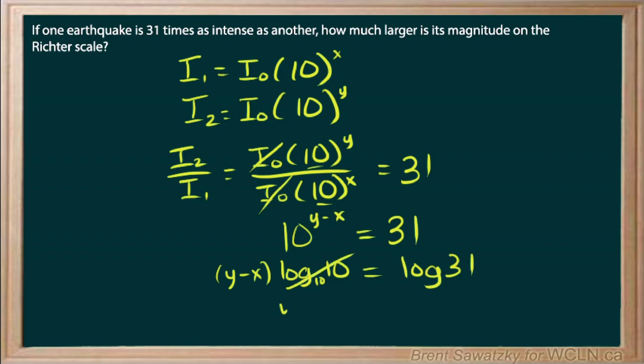So what this tells us is that the difference between the Richter scale measurements is log of 31. So we can plug that into our calculator, what is log of 31, and we come up with 1.49. So what that tells us is that the difference between the measurements on the Richter scale for these two earthquakes has to be 1.49. We're all done.